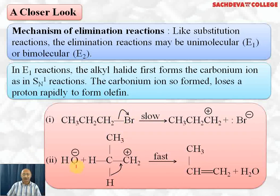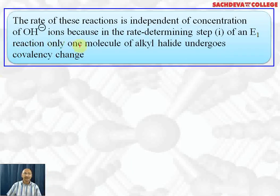This primary carbocation then has a nucleophile abstract a proton from the beta carbon. When the proton is abstracted, the pair of electrons takes part in double bond formation, and propene is formed along with water. This second step is faster. The rate of reaction is independent of the concentration of nucleophile because in the slow step only the alkyl halide is involved — that is why it is called E1 mechanism.